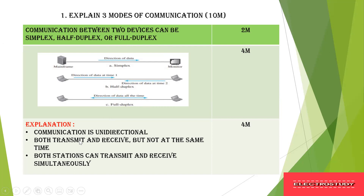For the explanation, these are the keywords. For simplex mode, remember the word unidirectional — the data is transmitted in a unidirectional way, and only one data at a time can be passed to the other end. For half duplex mode, transmission and receiving both take place, but not at the same time — at different times. For full duplex, it can transmit and receive data simultaneously — at the same time both things take place.